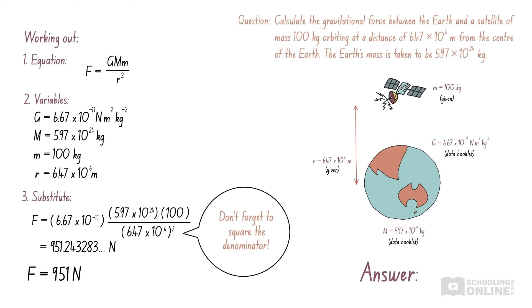Therefore, the Earth exerts a gravitational force of 951 Newtons on the satellite, and the satellite exerts an equal and opposite gravitational force on the Earth.